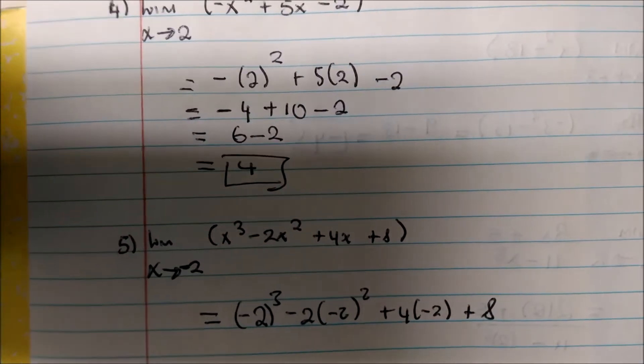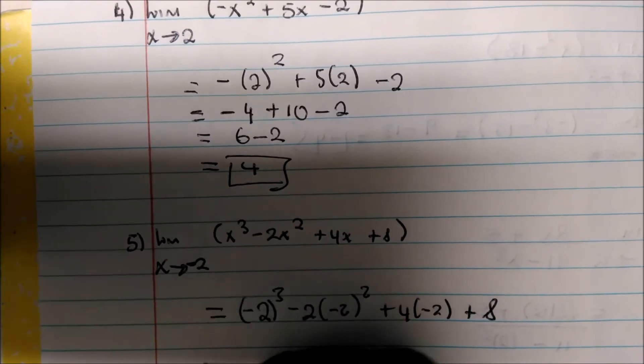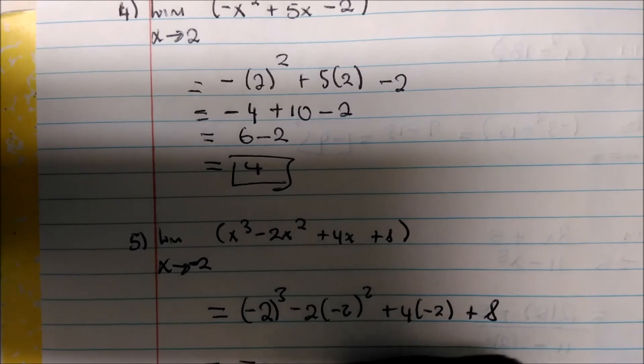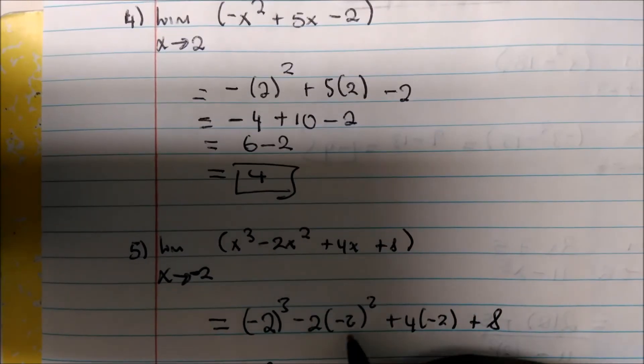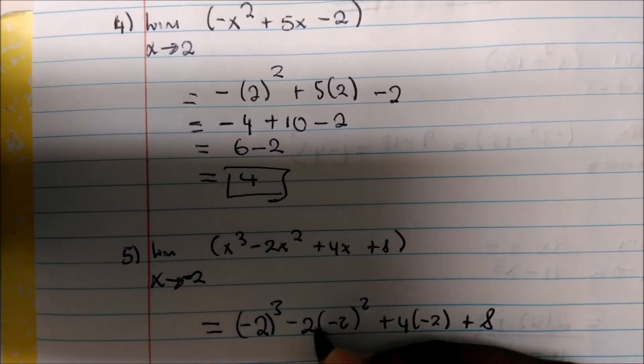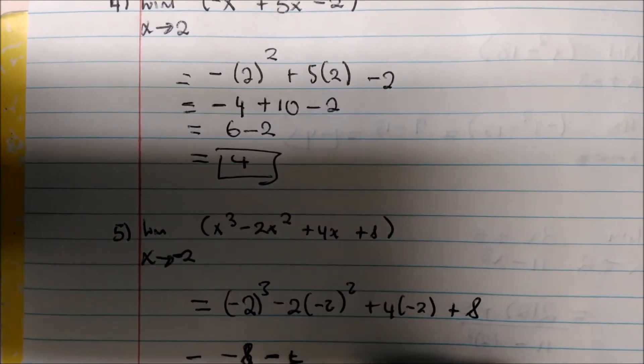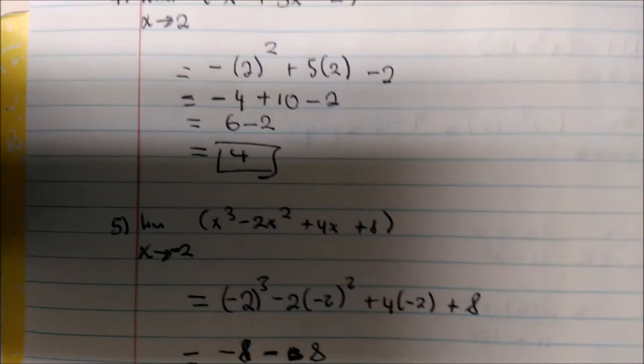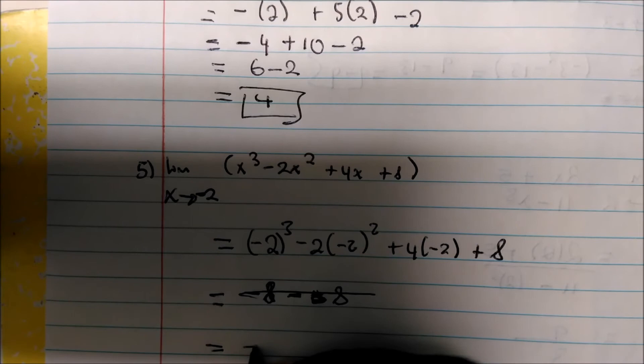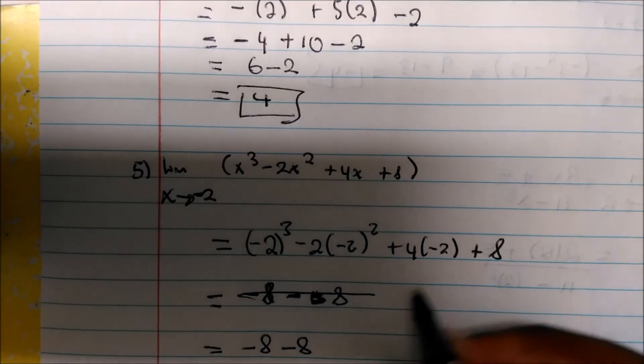Cubing a negative number to an odd power will always give you a negative value. So this is negative 8. This becomes a positive. So negative 2 is going to be minus. Because it's going to be negative 2 times 4. Negative 2 times 4, which is negative 8. So I apologize. Let me rewrite this. Negative 8 minus 8.